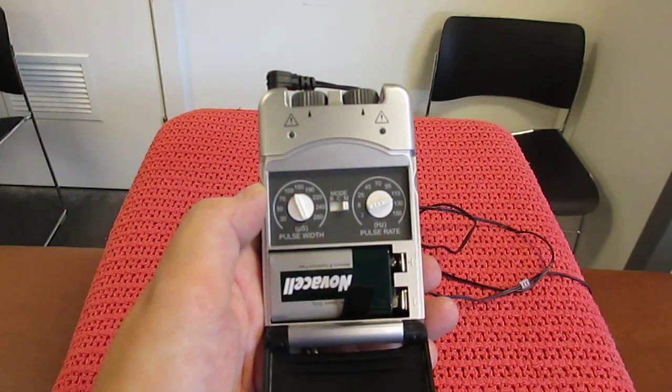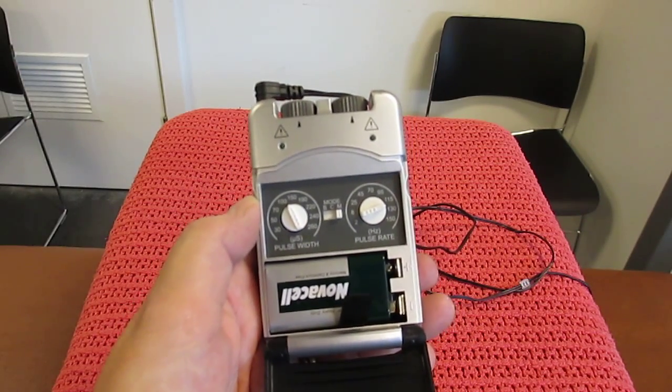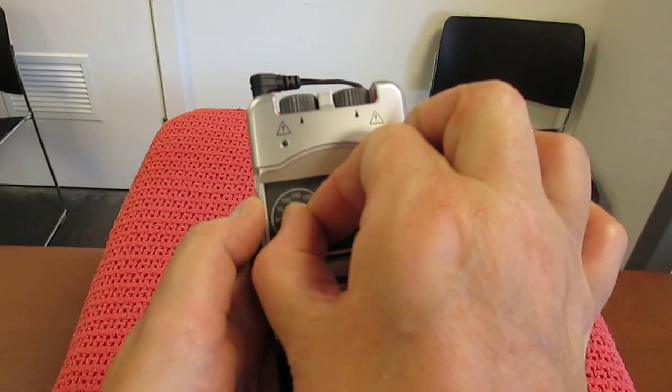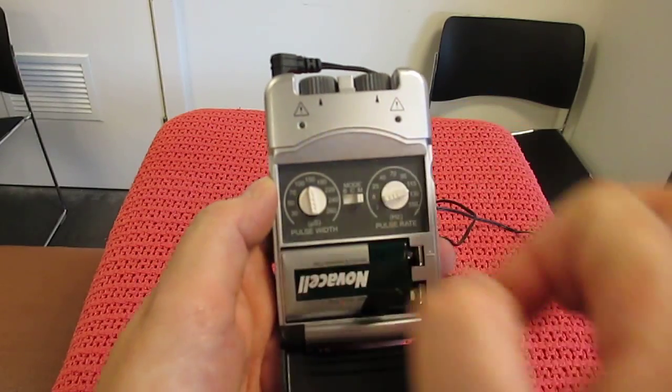You then select the pulse width duration. In this example we're going to select 150, which is at the top.